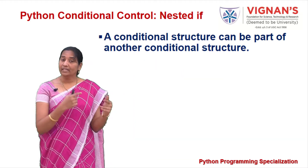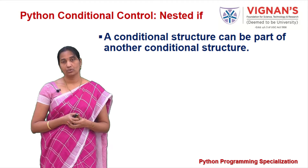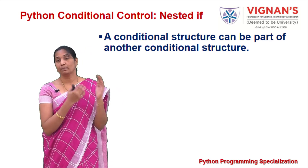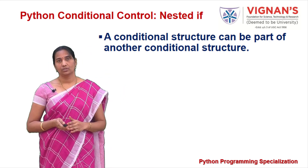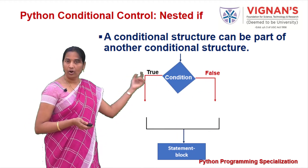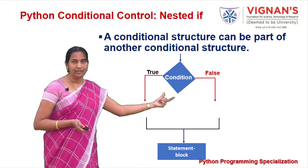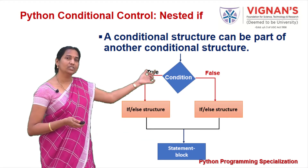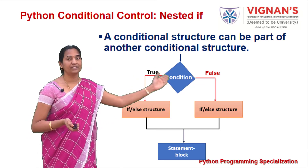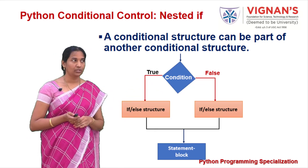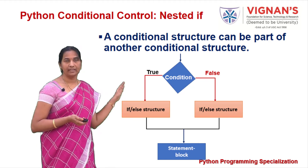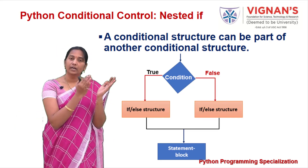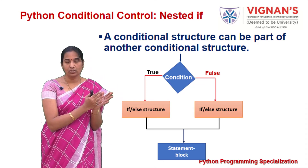Python also supports nested if structures, which allow one if-else structure to be placed inside another. Instead of simple statement blocks, you can place an if-else structure inside the if block or the else block, or both. Such a conditional control structure containing another conditional inside it is known as a nested if structure.